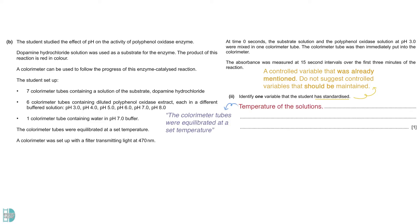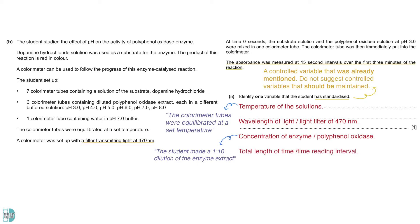In part B, it was mentioned that the calorimeter tubes were equilibrated at a set temperature. The wavelength used was set at 470 nanometers. At the beginning of the question, it was mentioned that the student made a 1 to 10 dilution of the enzyme extract, so the enzyme concentration was controlled at a constant. Lastly, the reading was done in a fixed time interval for the same total length of time.